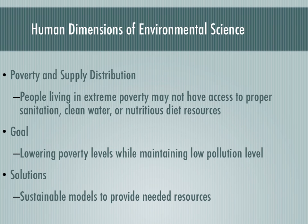There are also some human dimensions to environmental science. A huge part of environmental science is poverty and supply distribution. We know that a lot of people living in extreme poverty don't have access to things like proper sanitation, clean water, or a good food source. Our goal is to lower poverty levels and bring up these needs, but we also want to maintain low pollution levels in underdeveloped countries. Our solution is to create a sustainable model to provide these resources without causing excess pollution.